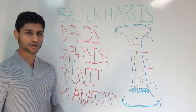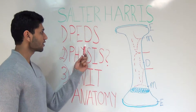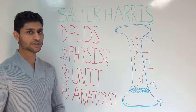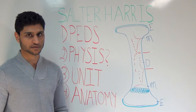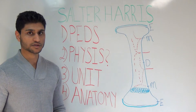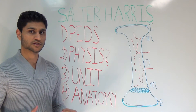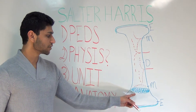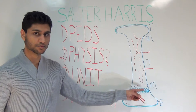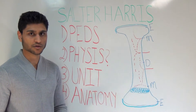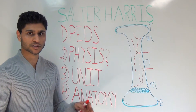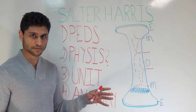Number one, we're talking about the pediatric population, which means these children are still growing. The presence of a growth plate means that this bone still has potential to grow.